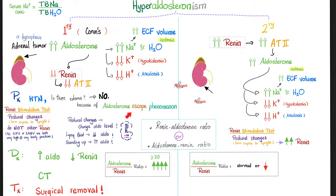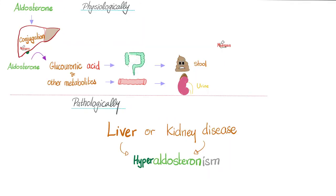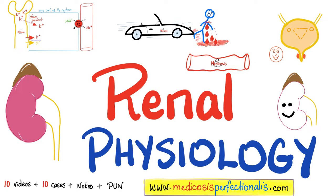Does primary hyperaldosteronism cause edema? No — because of the aldosterone escape phenomenon. After aldosterone performs its function, the liver metabolizes it into glucuronic acid and other compounds, which are excreted by the kidney or partly in stool. Therefore, liver disease or kidney disease can lead to hyperaldosteronism — which would be classified as secondary hyperaldosteronism, since the problem did not originate in the adrenal cortex.